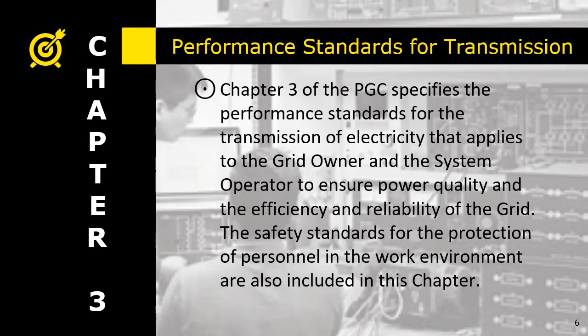Chapter 3 covers the performance standards for transmission of electricity that applies to the grid owner. In this part, there are many material standards and insulation standards for grid or transmission lines. Please take note of this and read all the sections. It also considers the safety standards for the protection of personnel in the work environment.